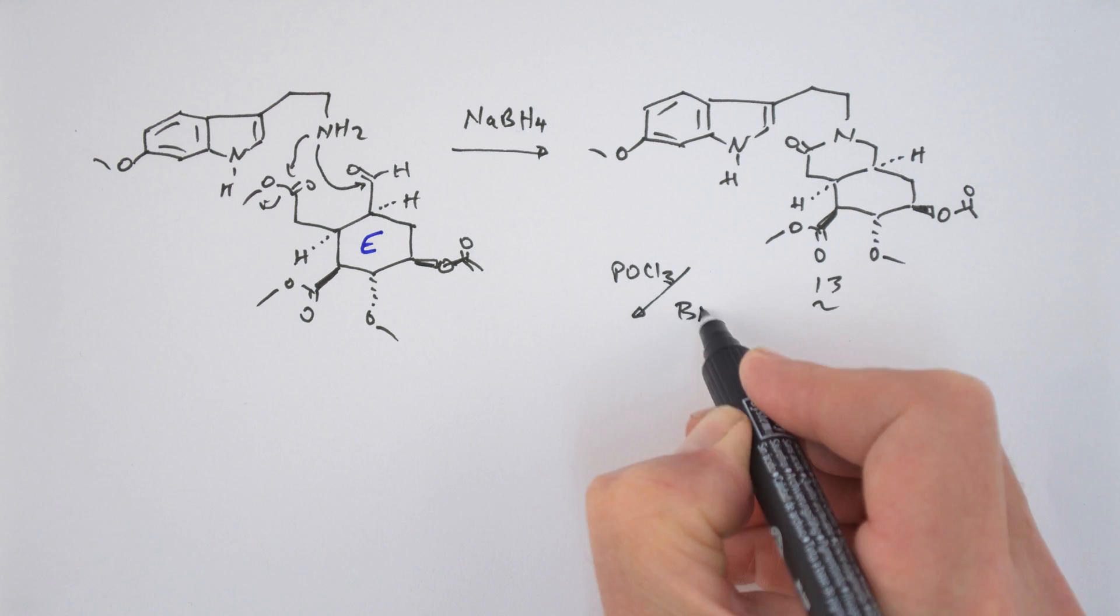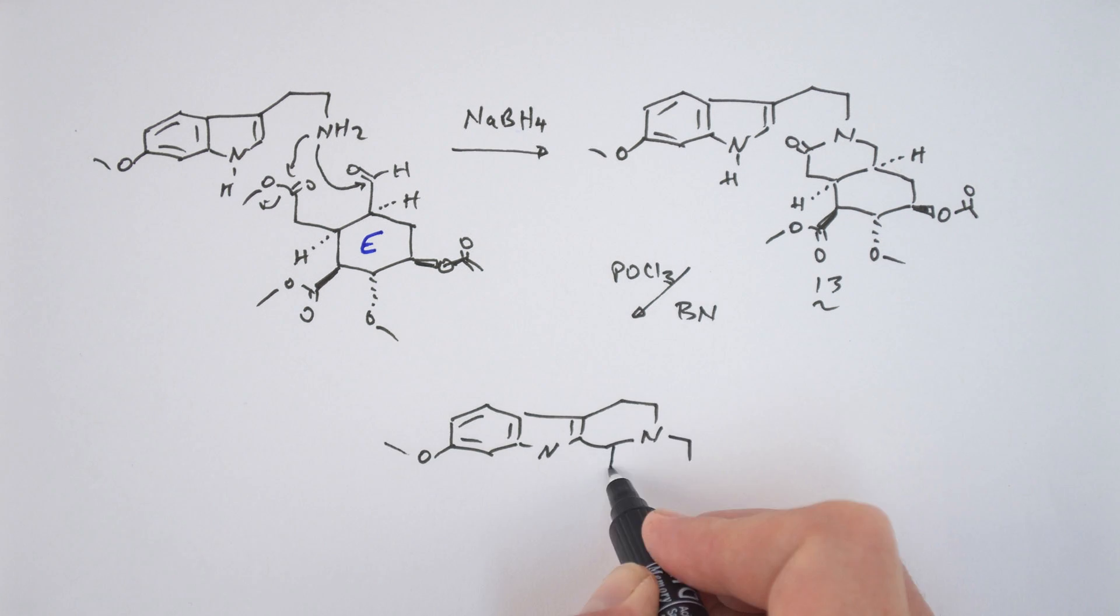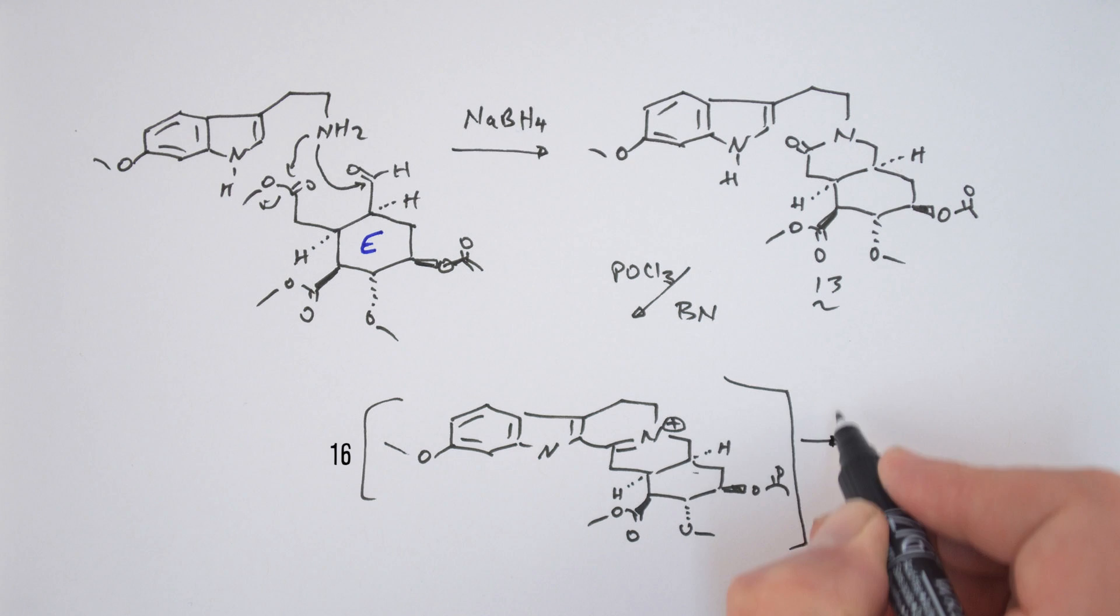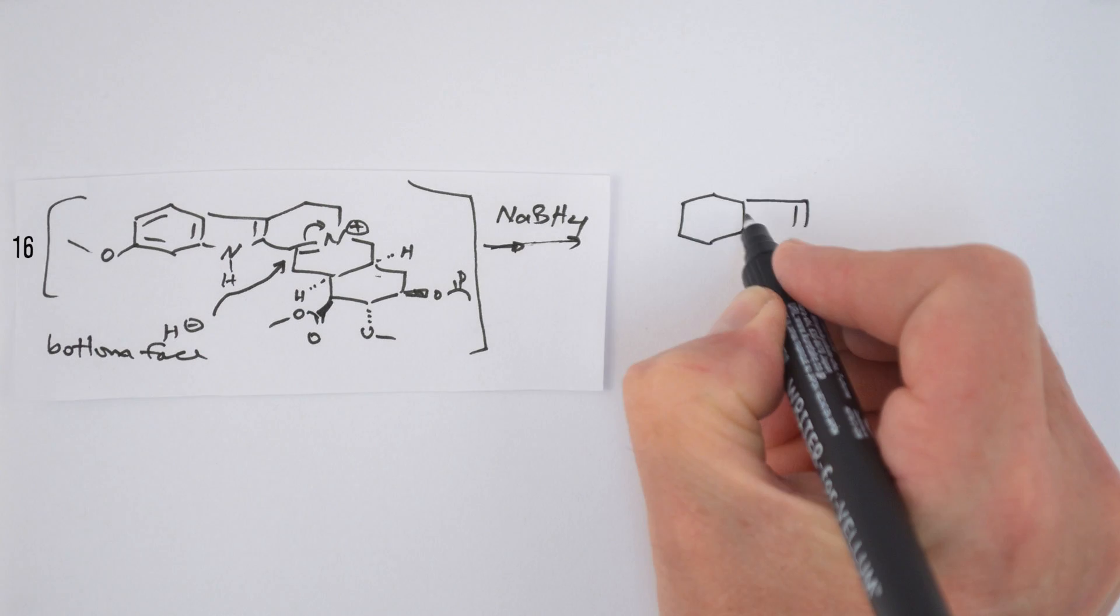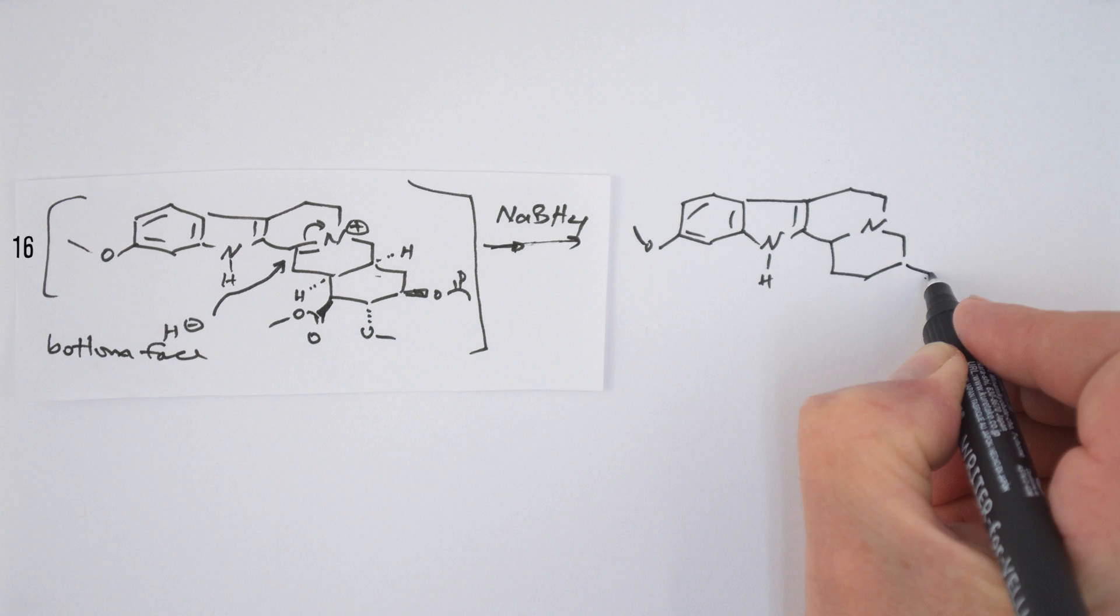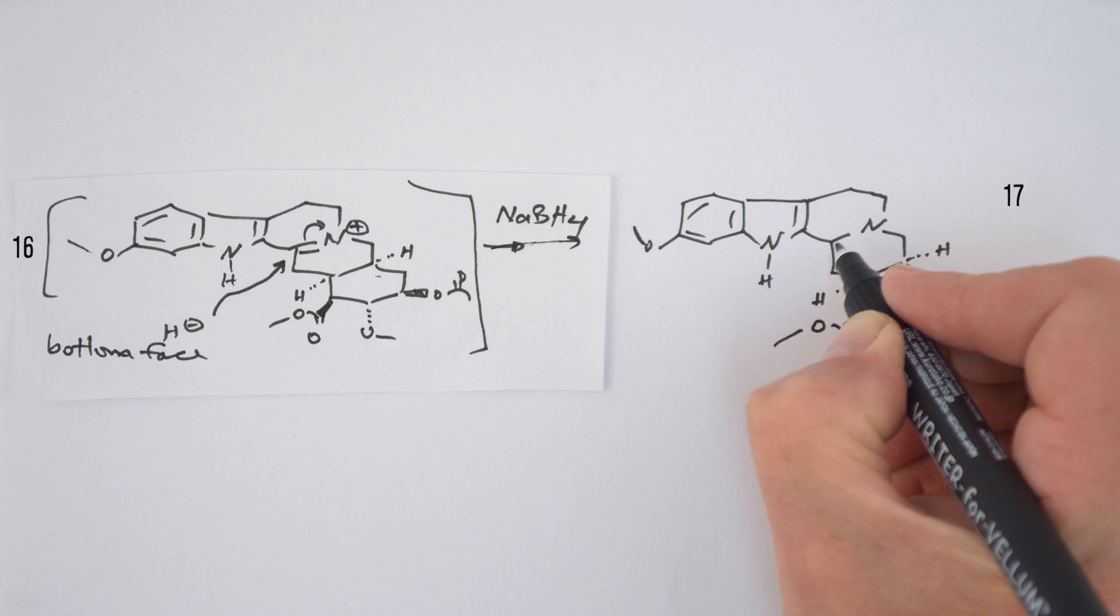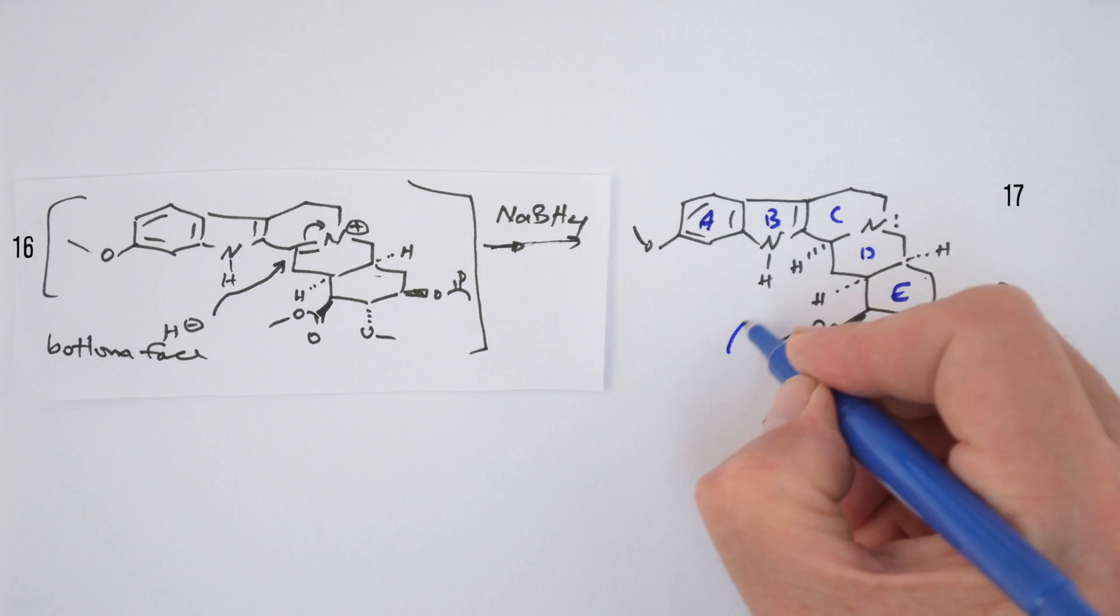This was followed by a reduction of the intermediate iminium ion with sodium borohydride to give the amide 13, which was subjected to Bischler-Napierowski conditions to give the intermediate iminium ion 16, which was reduced with sodium borohydride to give 17. 17 has all the correct stereochemistry of reserpine except at that new chiral center at C3 where the hydrogen has to be up.